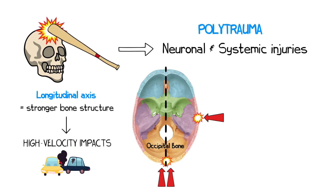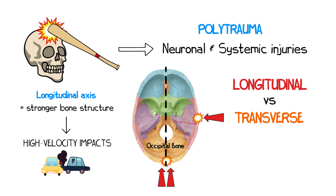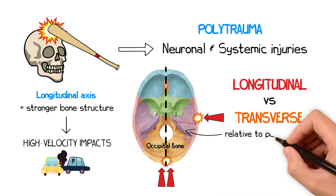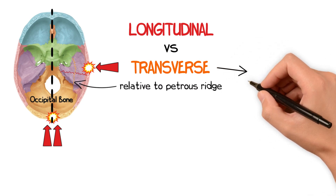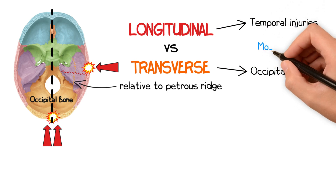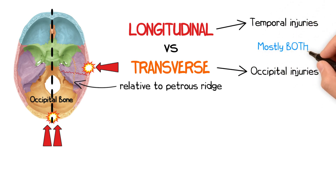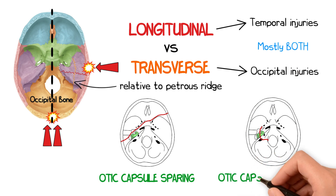Traditionally, temporal bone fractures are described as longitudinal or transverse, depending on the orientation of the fracture relative to the petrous ridge. Transverse fractures typically result from occipital injuries while longitudinal fractures result from temporal injuries. However, the majority of fractures are mixed with both transverse and longitudinal components. Therefore, considering fractures as otic capsule sparing or otic capsule involving is more clinically relevant.